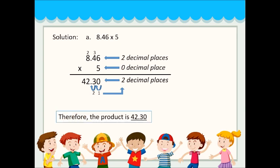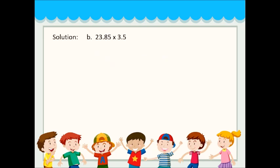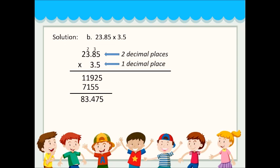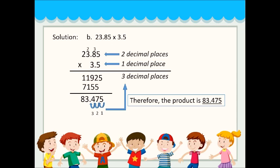The product is 42.30. Next, number B: 23.85 times 3.5. First multiply by 5, then multiply by 3, and add the results — we get 83.475. The first number has 2 decimal places, the second has 1 decimal place, so the total decimal places are 3. Therefore the product is 83.475.